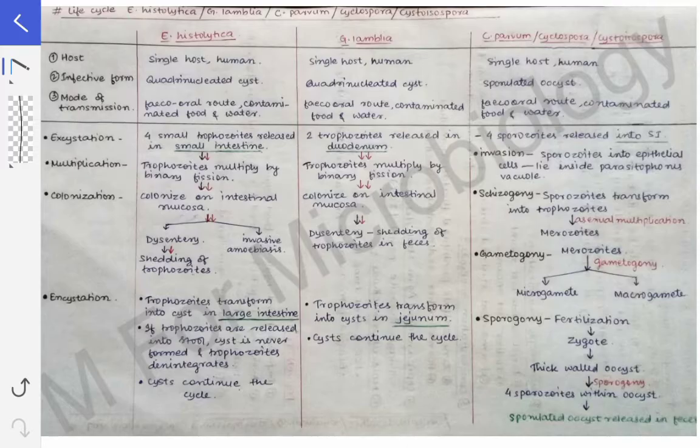This is the second part of the intestinal protozoan infections. As discussed earlier, the second part will be about the life cycle of Entamoeba histolytica, Giardia lamblia, and the opportunistic coccidian protozoans. We will talk about the life cycle of all of them in a table-wise manner so that it can stay in your minds for a longer duration. I have written here: Entamoeba histolytica, Giardia lamblia, and these are Cryptosporidium parvum.